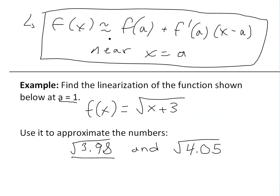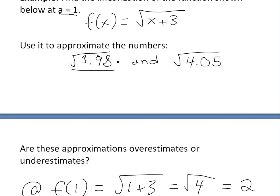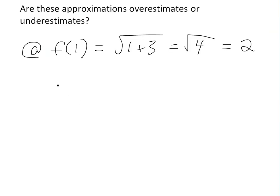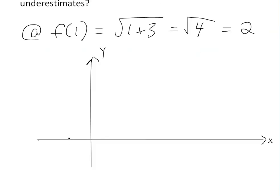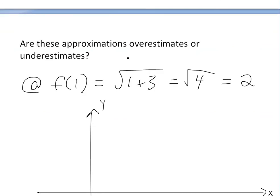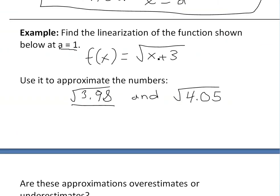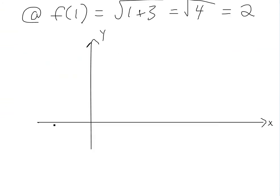Using the equation of the line, let's first graph this function. For √(x+3), we can't have a square root of less than zero, so the farthest left we can go is x equals negative three, where we get zero. The square root function starting at negative three curves out like this.